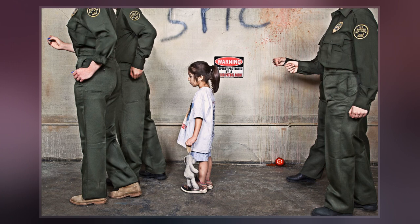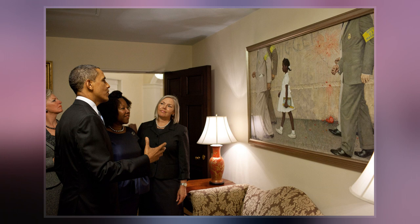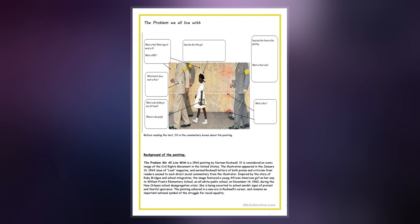On the wall behind her is written the racial slur nigger, and the letters KKK. A smashed and splattered tomato thrown against the wall is also visible. The white protesters are not visible, as the viewer is looking at the scene from their point of view. The painting is oil on canvas and measures 36 inches high by 58 inches wide.